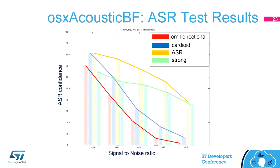Here are the results. On the y-axis we have the ASR confidence — a number provided by the Google APIs telling you how good the speech recognition was. On the x-axis we have the signal-to-noise ratio. We tested the system at different levels, starting from 15 dB — voice was 15 dB louder than noise — increasing the noise in steps of 5 dB down to minus 5 dB. The red curve shows the performance of an omnidirectional microphone.